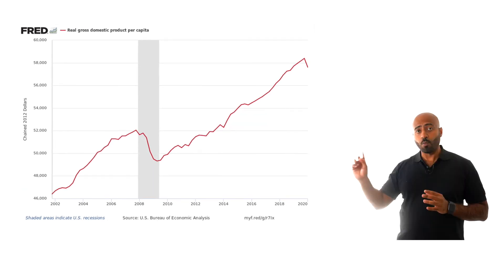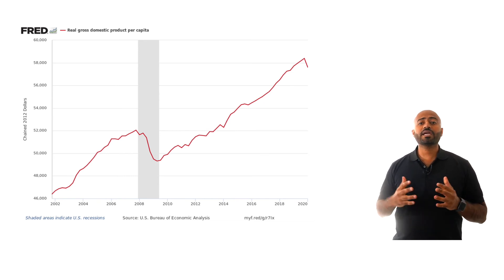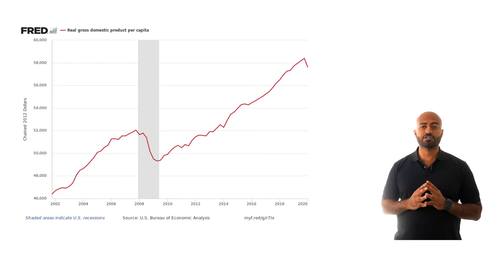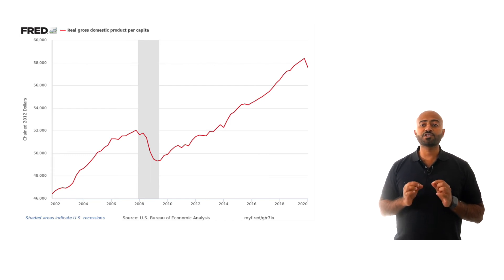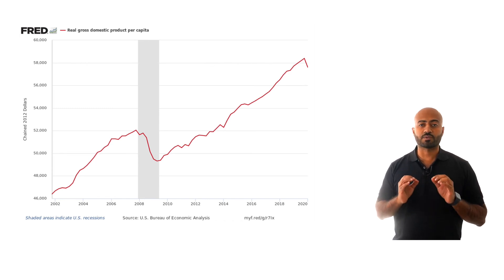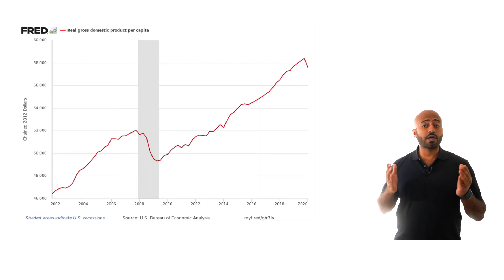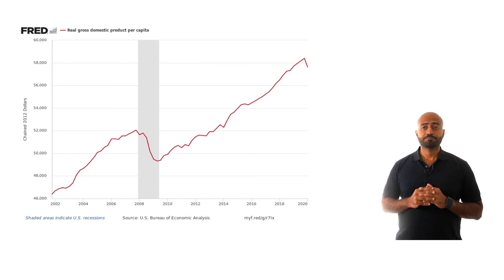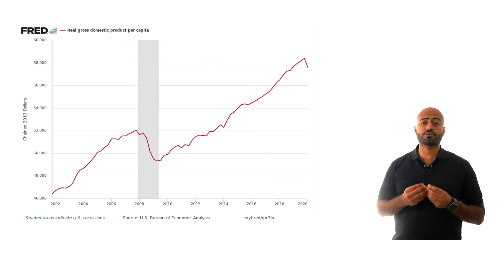You'll notice one shaded area in this graph. The gray area indicates periods where the US economy was officially in a recession. From 2008 to 2009, US GDP fell — that recession is now known as the Great Recession. GDP also fell in the first quarter of 2020, but it is not shaded because to officially be considered a recession, GDP must decline for two consecutive quarters.